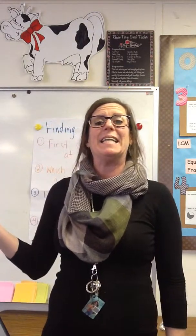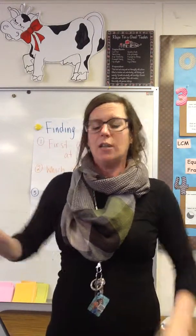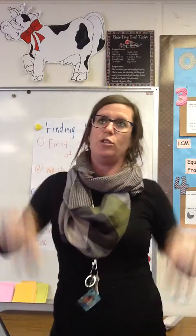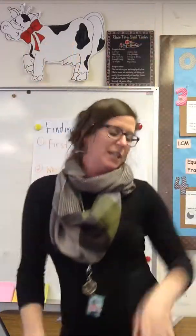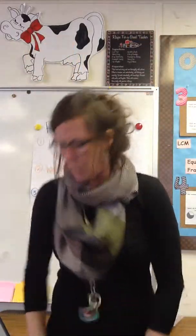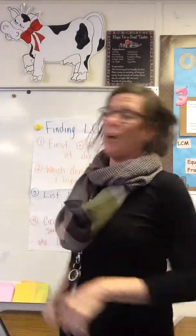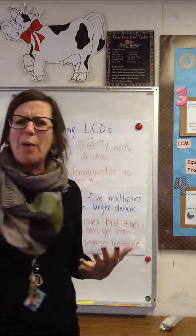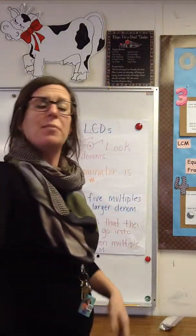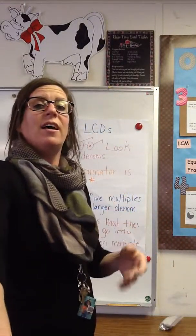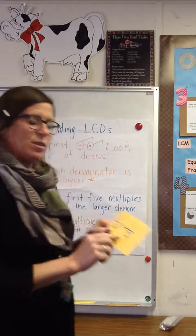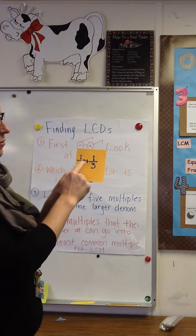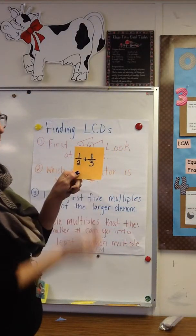What is a denominator? A denominator is the number on the bottom — the numerator is on top, the denominator is the bottom number of a fraction. Finding common denominators means that they have something the same about them. So I'm going to look at an example here, like one-half plus one-third.